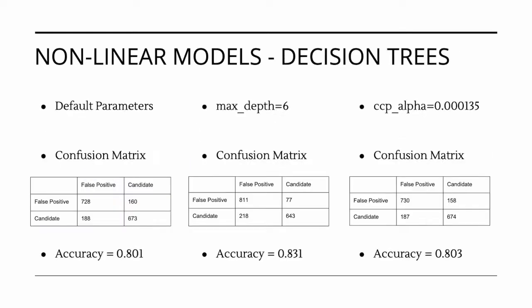Moving on to decision trees, we decided to evaluate three decision trees with various hyperparameter tuning. Our first decision tree model had no specified tuned parameters. This resulted in our default decision tree model with an accuracy of 0.801.